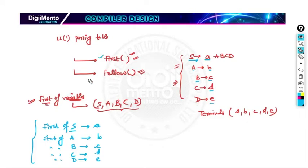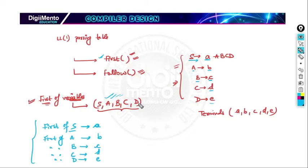The first function means: if you have a variable and you try deriving all strings from it, whatever terminal comes at the beginning is the first of that variable. So first(S) = a, first(A) = b, first(B) = c, first(C) = d, and first(D) = e. The first of any variable will always be a terminal, not a variable.